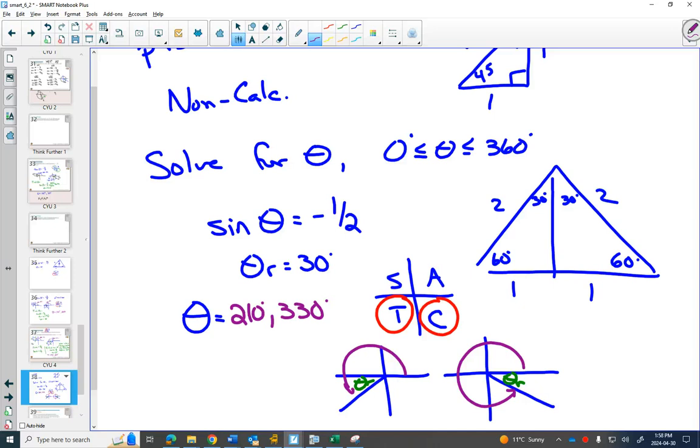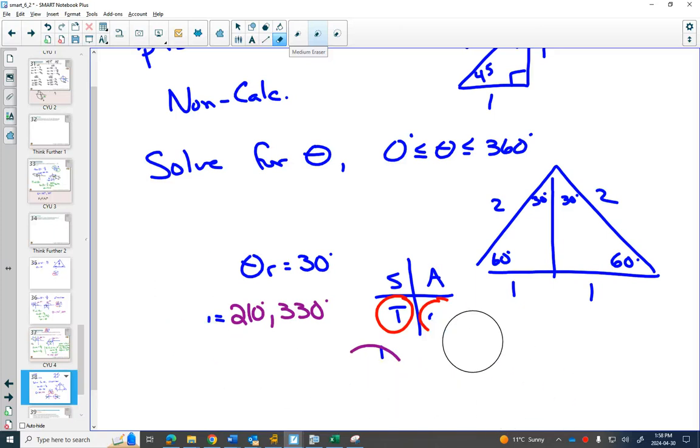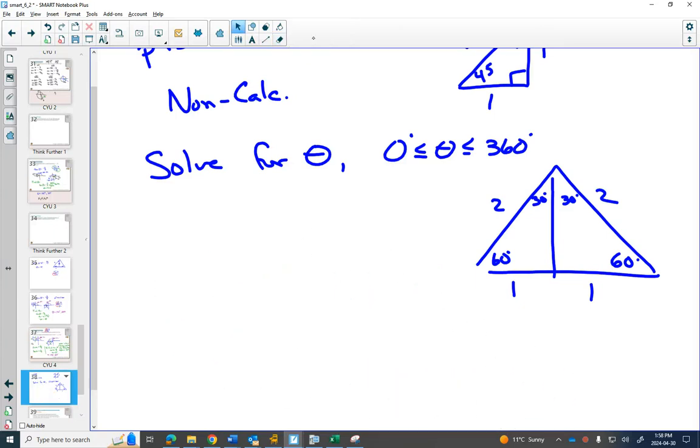I'm going to do one more. Can I erase everything except for the special triangles? Solve for theta, and this time, we are going to get 3 tan theta minus root 3 is equal to 0.